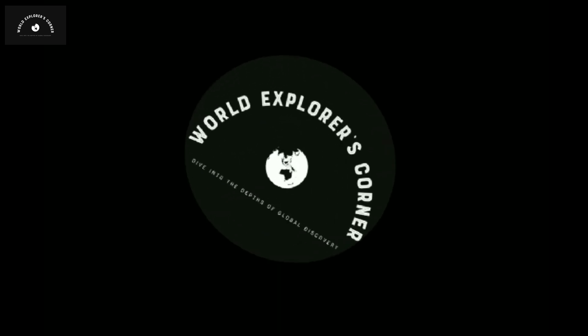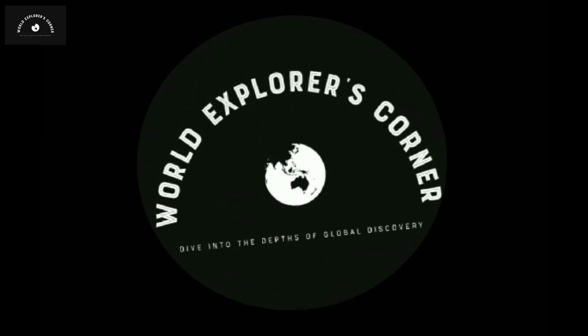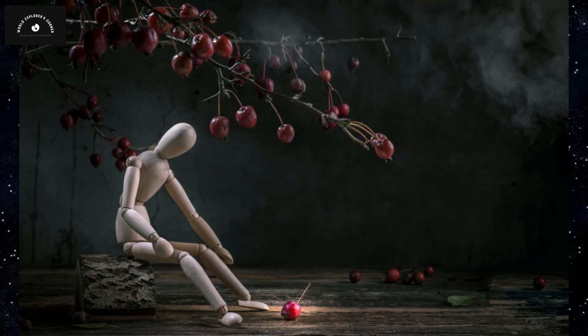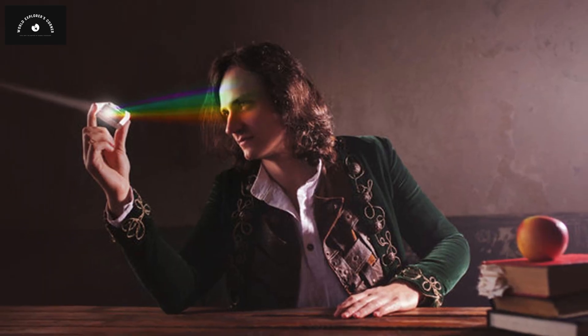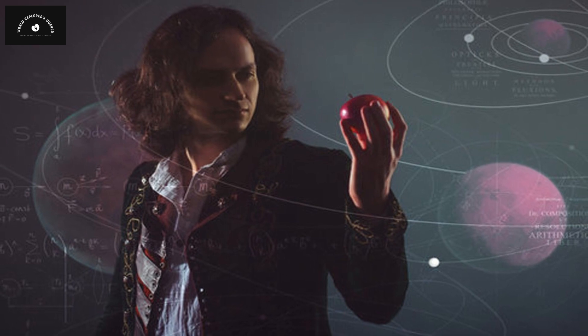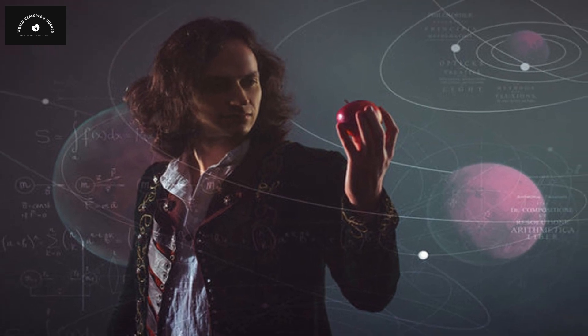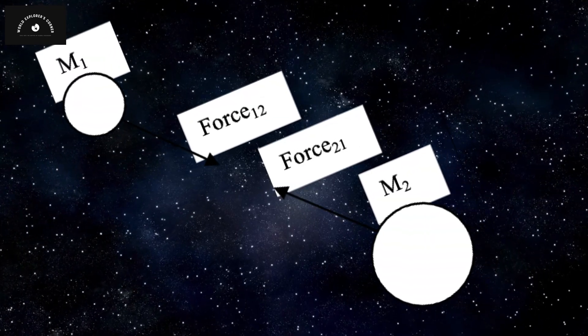Welcome back to World Explorer's Corner Videos. This story begins with an apple falling from a tree in front of the famous physicist Sir Isaac Newton. Upon witnessing this event, he pondered deeply about why the apple fell downwards and not upwards.